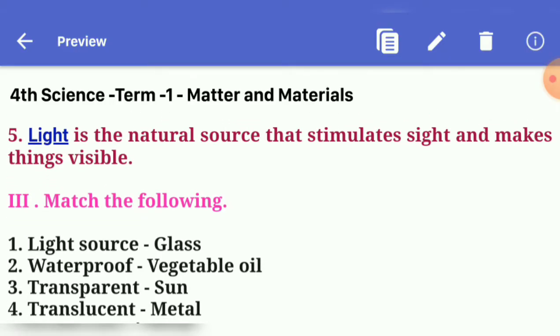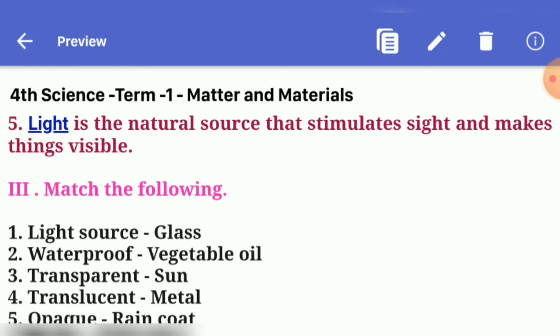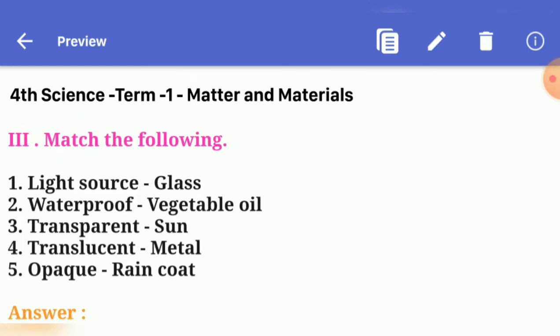Fifth one: dash is the natural source that stimulates sight and makes things visible. Answer: light. Next, third roman, match the following question. Light source, glass. Second one, waterproof, vegetable oil. Third one, transparent, sun. Fourth one, translucent, metal. Fifth one, raincoat.